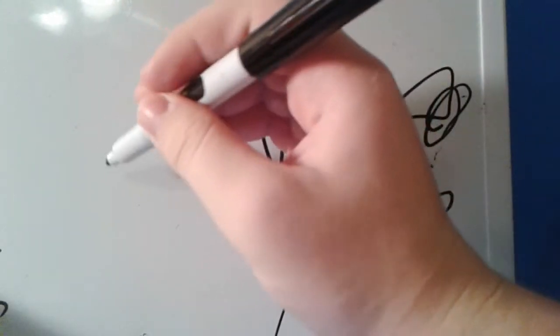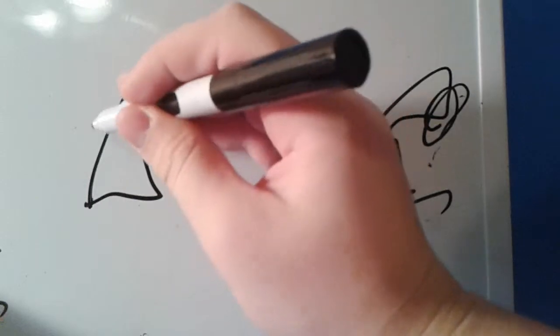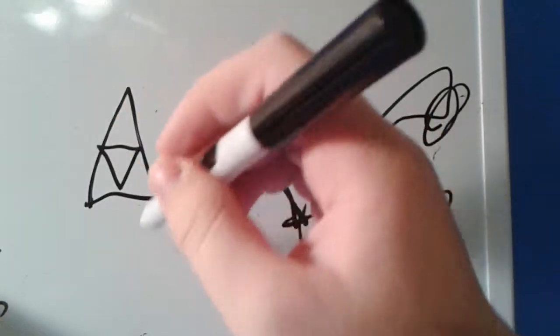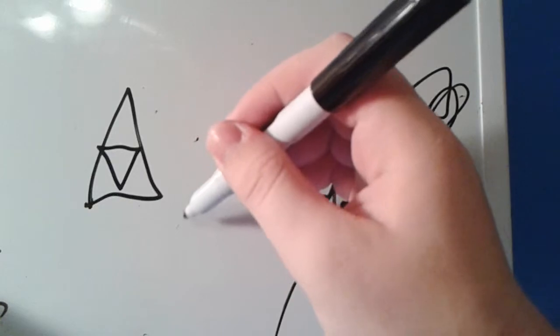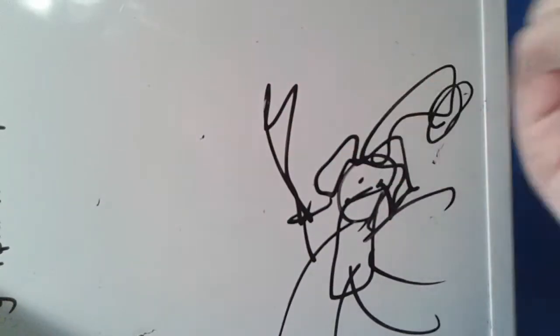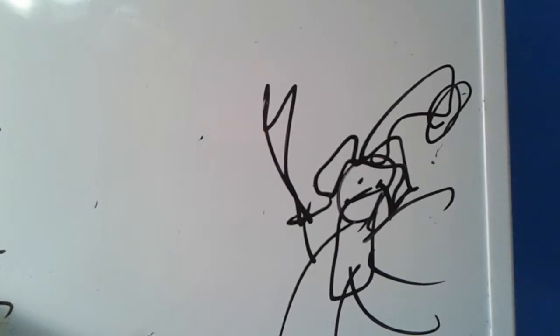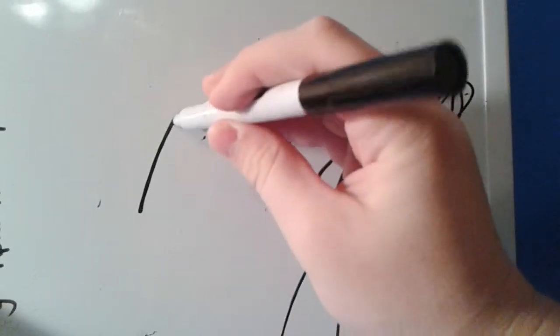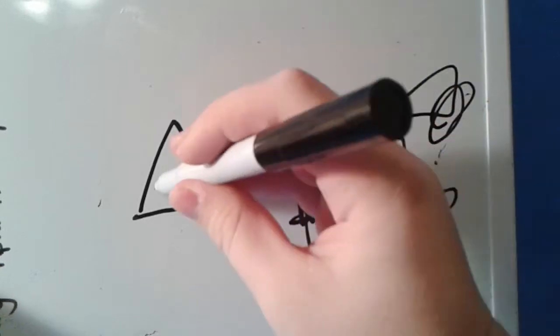Here we have the Triforce. Now, the Triforce is a triangle, which is the Illuminati. But something else you might not have noticed is one of the main things from the Zelda series that people remember.